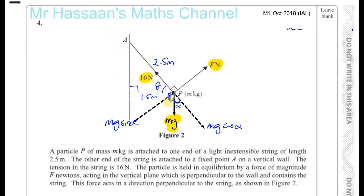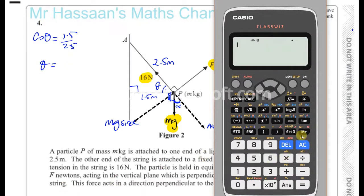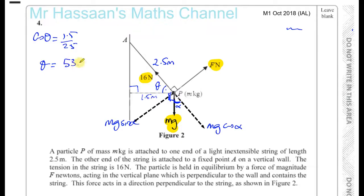So let's find theta first. We have the adjacent and we have the hypotenuse. We can say cosine of theta is 1.5 over 2.5. So theta is going to be shift cosine 1.5 over 2.5, which gives us 53.1, which I'll store as A. So that's 53.13. That's the angle over there.